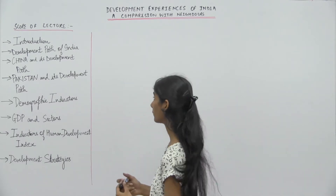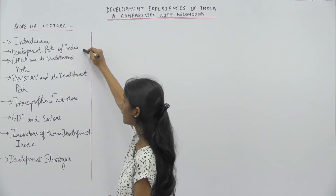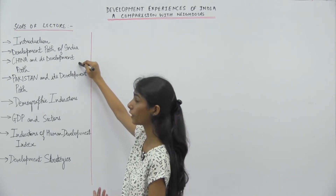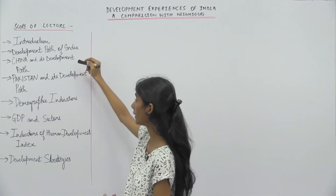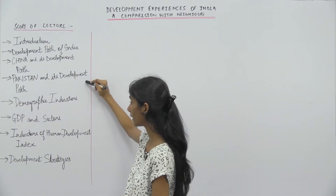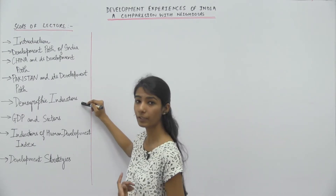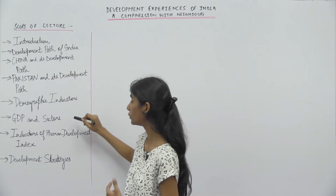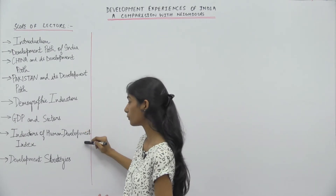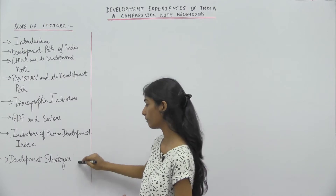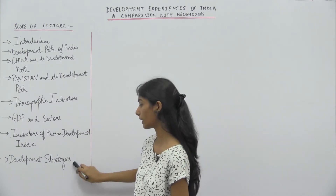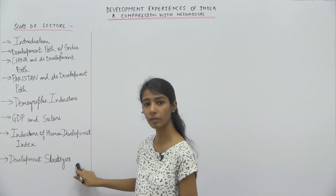In this chapter, we will study about India's development path, the Chinese economy and its development path, Pakistan and its development path, demographic indicators, GDP and sectors, indicators of Human Development Index and development strategies. Lastly, we will study about India, Pakistan, and China's economies and development strategies.